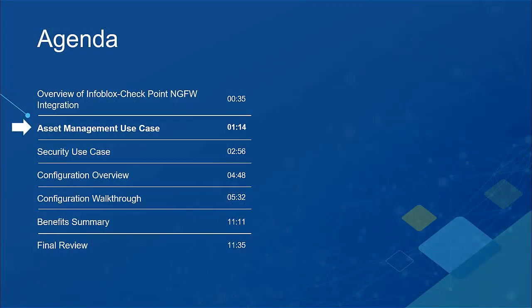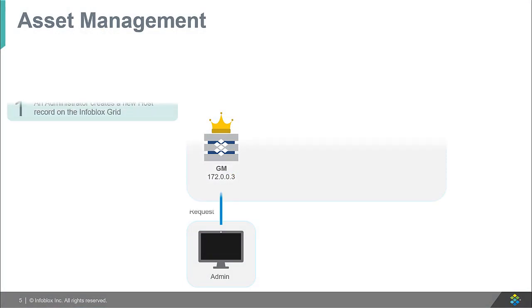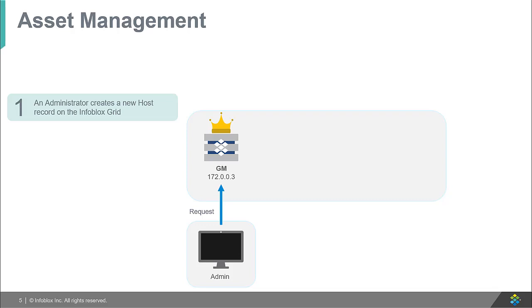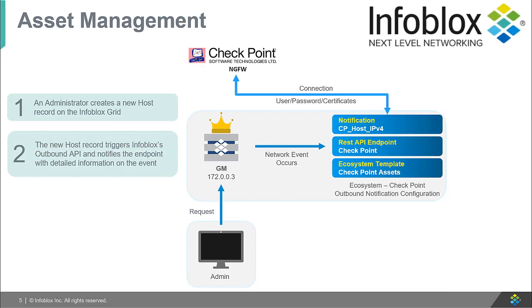Now let us look at the first use case: Asset Management. This use case demonstrates how Infoblox adds new objects to Checkpoint's Next Generation Firewall. First, an administrator creates a new host record on the Infoblox grid. The host creation then triggers a notification that delivers detailed information about the event to the Checkpoint device via Infoblox's outbound API. Finally, the host record is visible within the Checkpoint Next Generation Firewall. Firewall policies can then be easily applied by the administrator to specific devices, networks, or ranges.